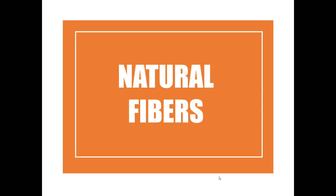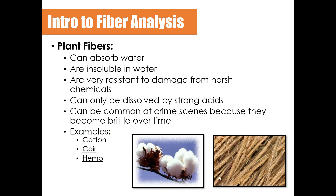Now let's talk about natural fibers and synthetic fibers individually and some characteristics of each. Starting with natural fibers, one example is plant fibers. Plant fibers tend to absorb water. They are insoluble in water, meaning they don't dissolve in it. They are very resistant to damage from harsh chemicals and can only be dissolved by strong acids. They are commonly found at crime scenes because they become brittle over time and break off, making them useful as trace evidence. Examples include cotton, corn, and hemp.